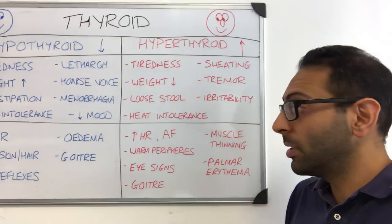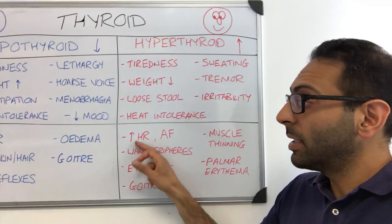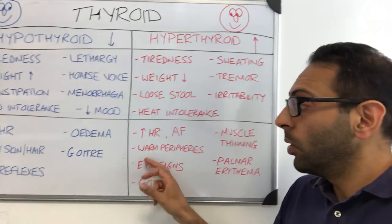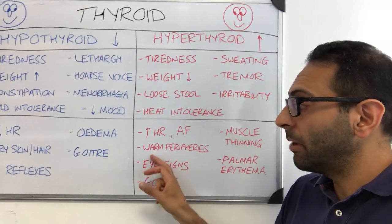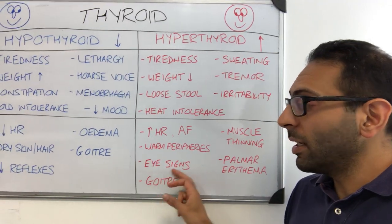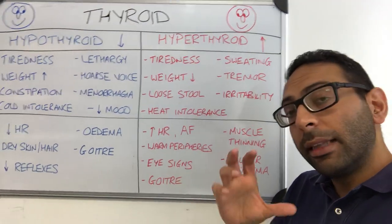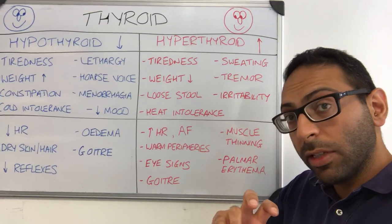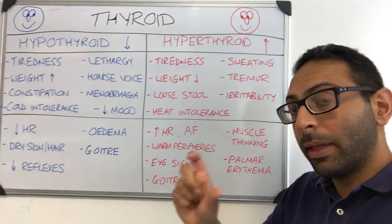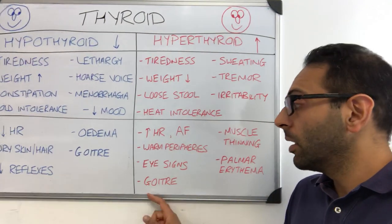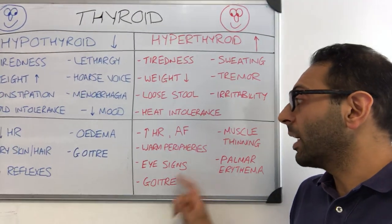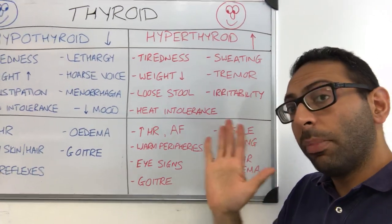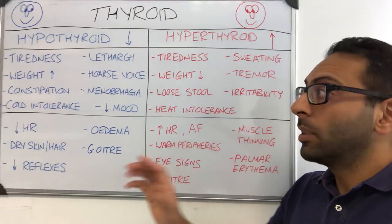In terms of signs, what do you see? You may see tachycardia alongside atrial fibrillation, warm peripheries, eye signs — and these may depend on whether Graves' disease is the cause or a non-Graves' disease cause; we'll talk about that in a different video. Goiter again in the neck, you may see muscle thinning, and you may see palmar erythema.